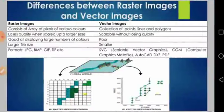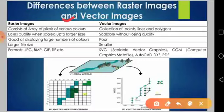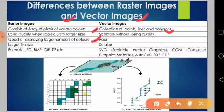I used two important terms in the previous slide — raster image and vector image. The raster image consists of an array of pixels of various colors, whereas a vector image is a collection of points, lines, and polygons. Raster images lose quality when scaled up, whereas vector images are scalable without losing quality. Raster images are good at displaying large numbers of colors but have a larger file size, whereas vector images are poor at displaying many colors but have a smaller file size.